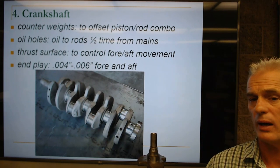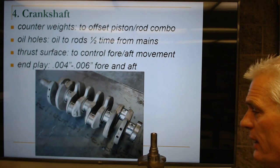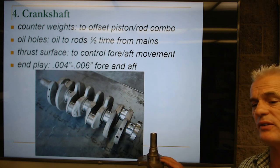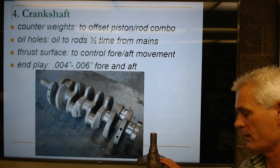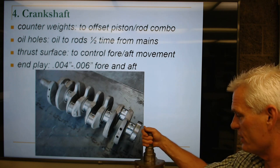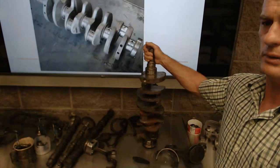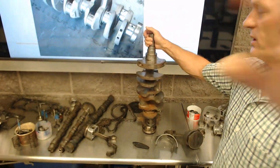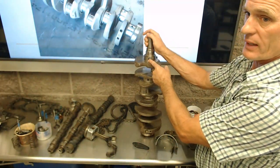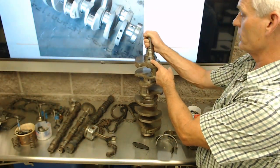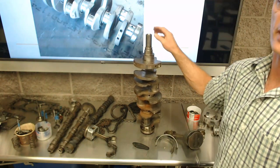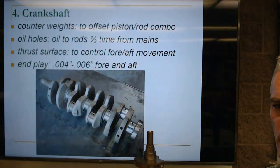There are oil holes to the rods. It used to be that we would only get oil to the rods 50% of the time, which was problematic. A lot of cranks are now drilled through the center — cross-drilled — with a hole on each side so oil goes to the rods 100% of the time. That keeps the engine alive.